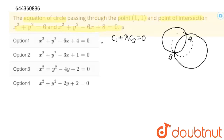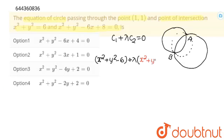So I am going to write C1 as x² + y² − 6, and this is C1 plus lambda times C2. C2 will be x² + y² − 6x + 8 = 0.